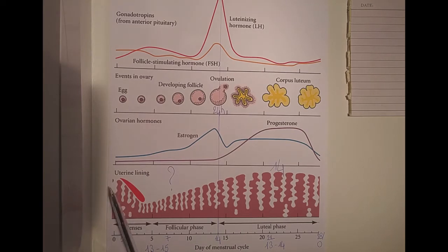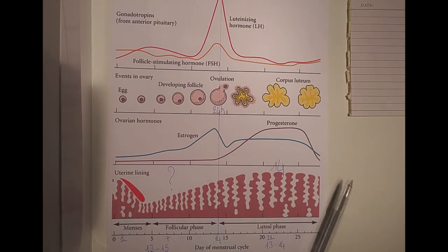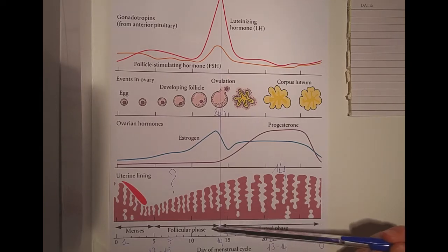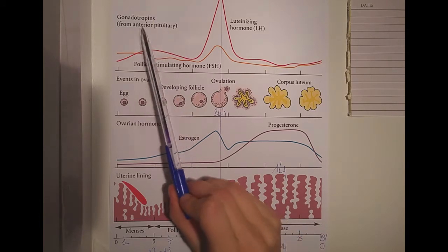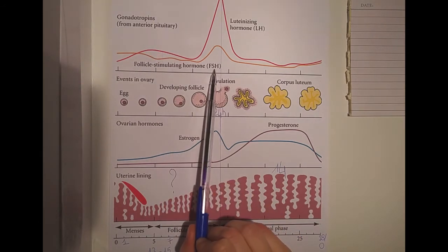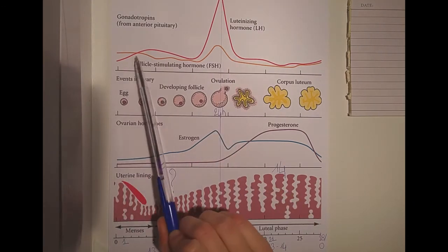Bear in mind that the last day of one cycle is also the first day of another cycle, because the first day of a cycle is the first day of your period. So what happens in the first part — the follicular phase — is that the anterior pituitary gland starts producing FSH and LH hormones.